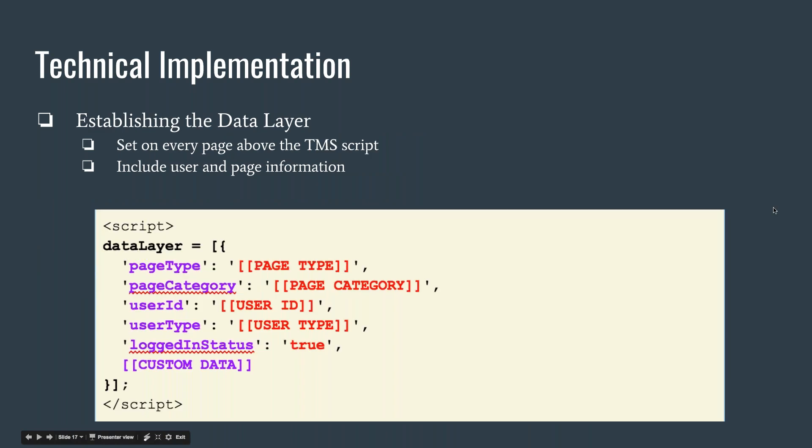This is what establishing the data layer looks like. If you're using Google Tag Manager, it will define the data layer for you. But sometimes you want to have values in that data layer before the TMS ever executes. This is what it looks like to define an array with an object — the curly brackets define an object in JavaScript and the hard brackets define an array. Inside that object we have page type, page category, and user ID. These red values are meant to be put in dynamically — this is something you would hand off to your dev team and say: just above the Google Tag Manager snippet, I want to have all of these values set, but these red values need to be dynamically inserted in.